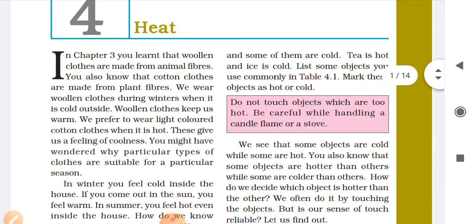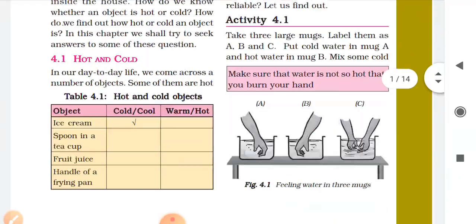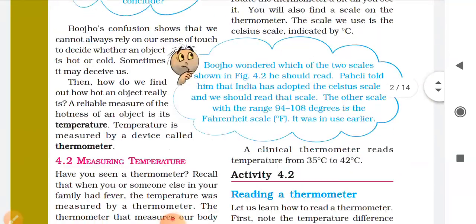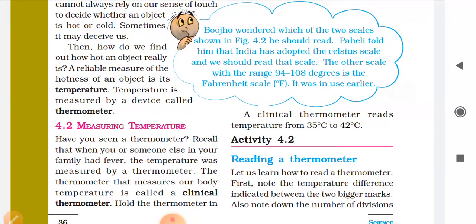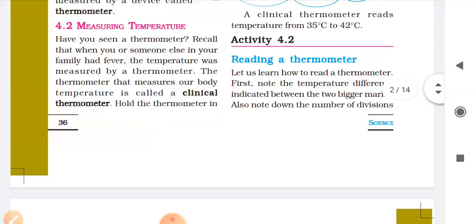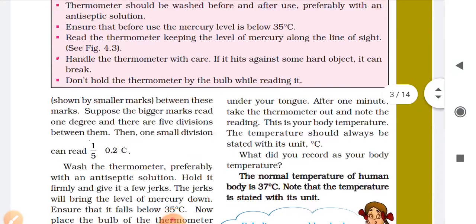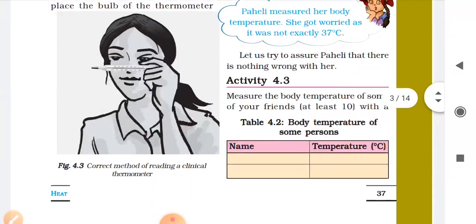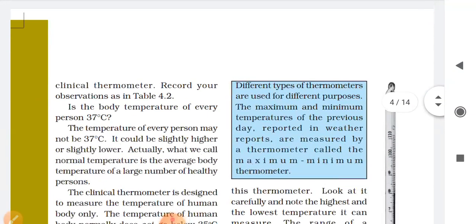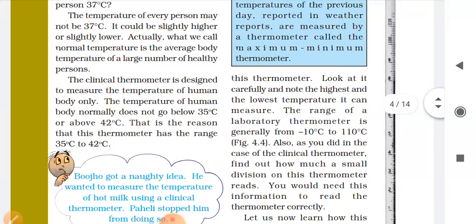In part 1 we understood about hot and cold, the clinical thermometer, and what temperature is. Temperature is a reliable measure of the hotness of an object. It is measured by a device called a thermometer, and we also understood the precautions we should take when measuring temperature with the clinical thermometer.